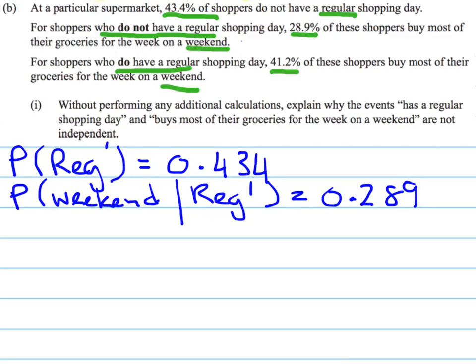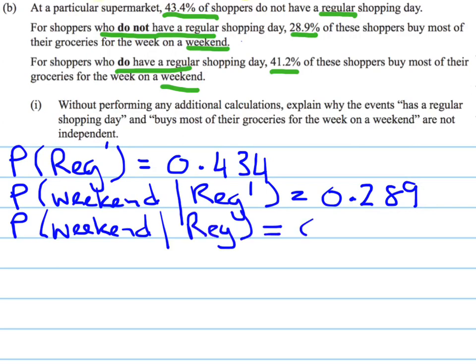Our third piece of information: for shoppers that do have a regular shopping day, 41.2% buy their groceries on the weekend. So the probability of buying groceries on the weekend, given that they do have a regular shopping day, is 0.412. We can't use our standard probability independence rules here, which is why they want us to explain why these events are not independent.